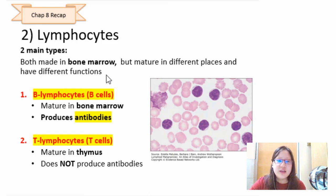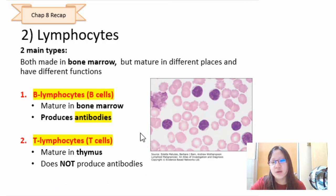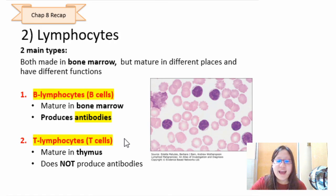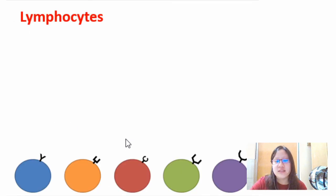There are two types of lymphocytes. B lymphocytes are produced and mature in the bone marrow — hence the name 'B cells' — and they produce antibodies. T lymphocytes are made in the bone marrow but mature in the thymus, and do not produce antibodies. This is a very summarized version; there is more detail to cover about lymphocytes and what they do, which we'll go into in the next video.